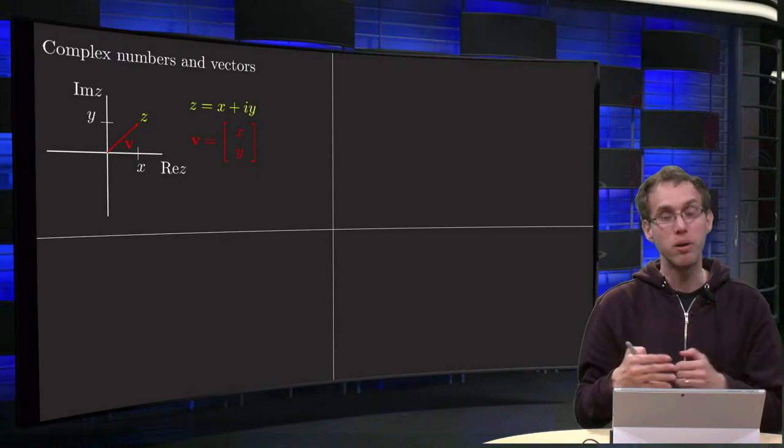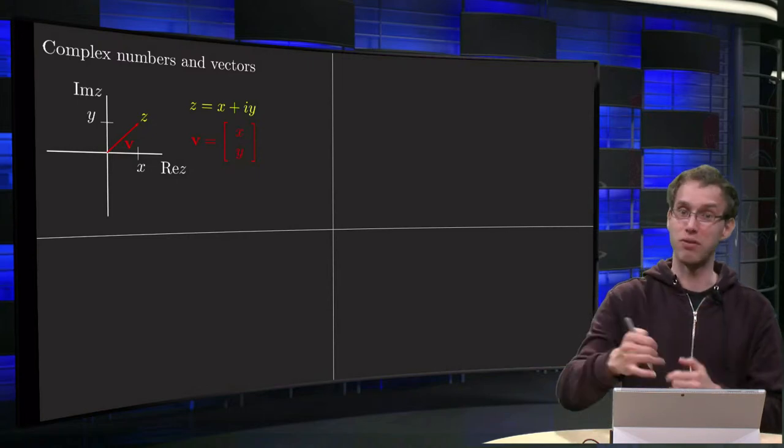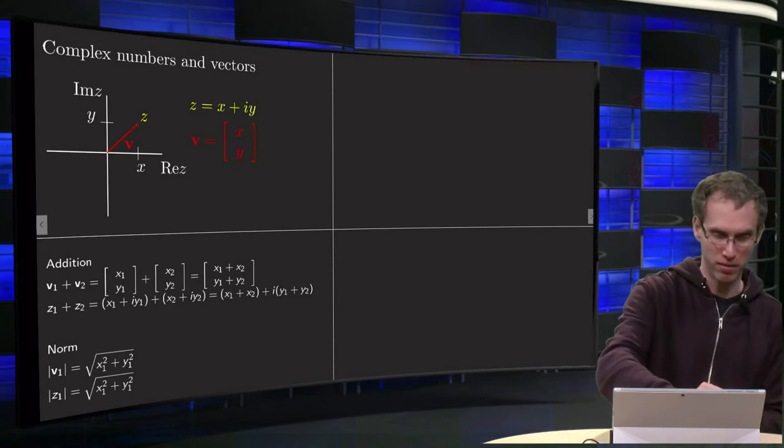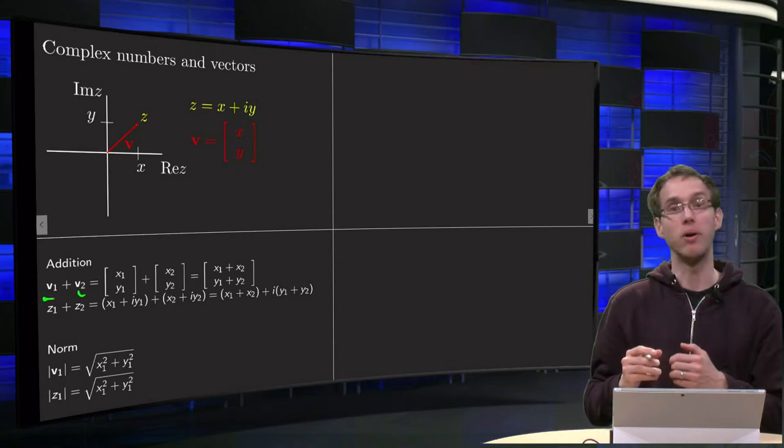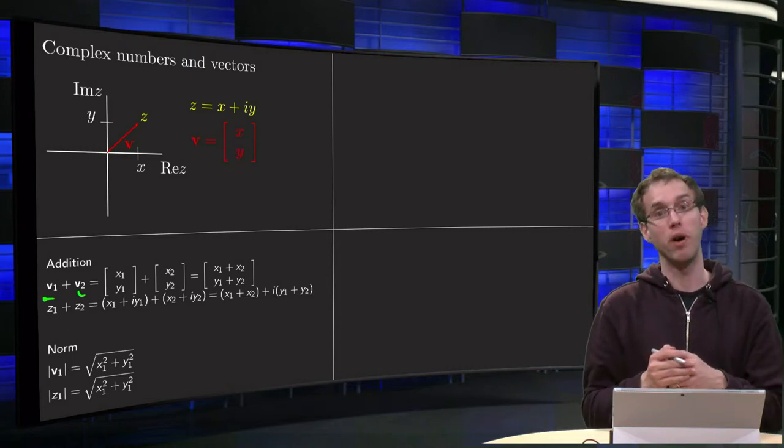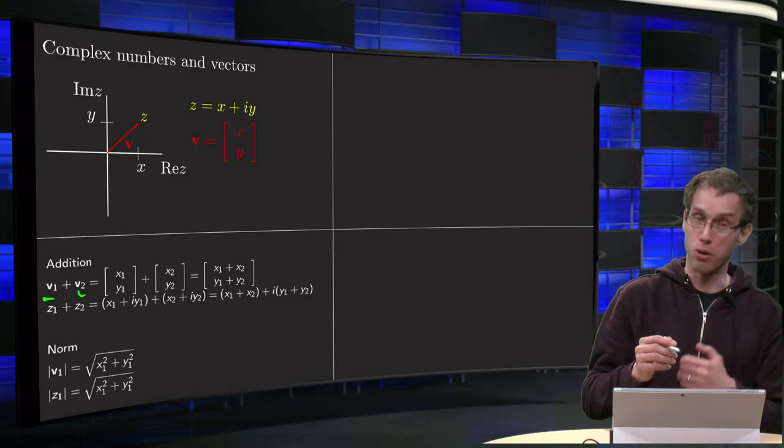And then we see that certain properties are the same for vectors and for complex numbers. For example, if you add two vectors v1 and v2, you add x1, y1 and x2, y2, you get x1 plus x2 and y1 plus y2, component-wise.